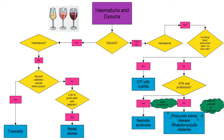We now look at a patient who may or may not have dysuria, and they do have haematuria, but they answer no to vomiting, fever, abdominal pain, and a positive urine dip. We ask them: do you have high blood pressure and protein in your urine? If yes, we look at nephritic syndrome. If no, we look at polycystic kidney disease, rhabdomyolysis, or balanitis. Rhabdomyolysis can be caused in elderly people by a fall and a long lie, and in young people by extreme exercise such as running marathons.